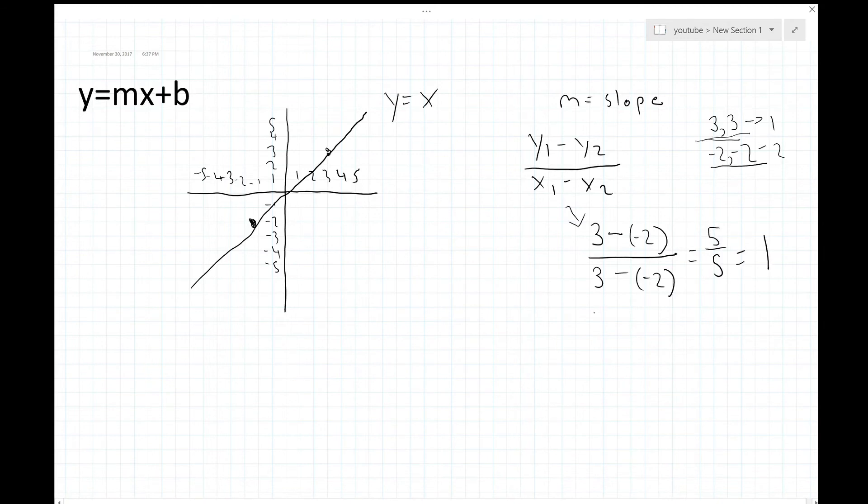So far we have y equals 1x plus b. That's pretty much the concept of the slope. Now, let's look at b. B is a simpler concept. B is the y-intercept which in simpler words is just the value on the y-axis where the line crosses it. In this example it's the origin which is 0 on the y-axis. If there was a line like this it would be about two and a half. That's b. In this it's 0.